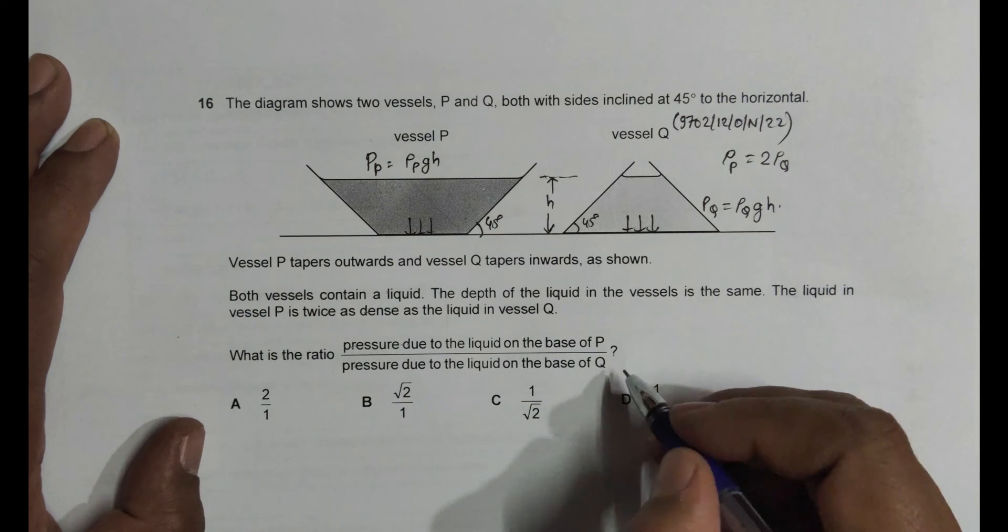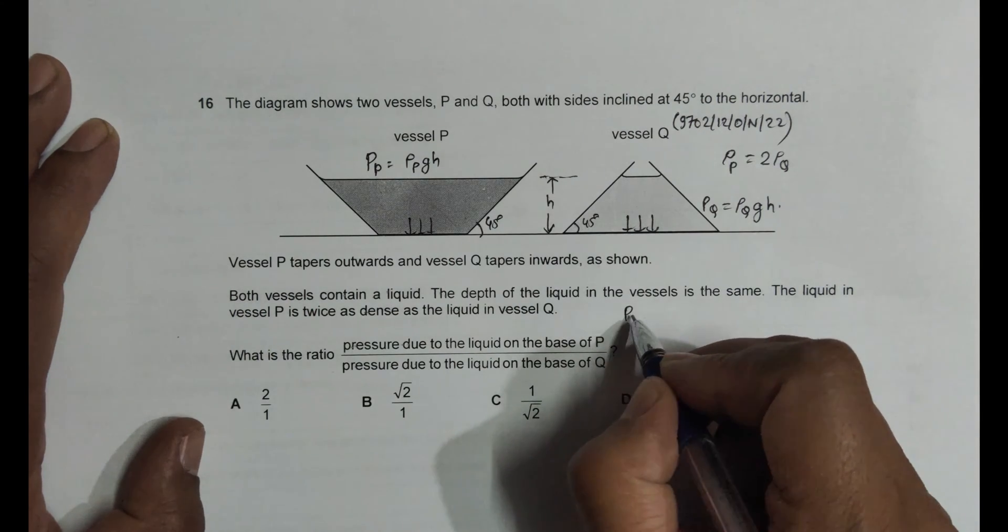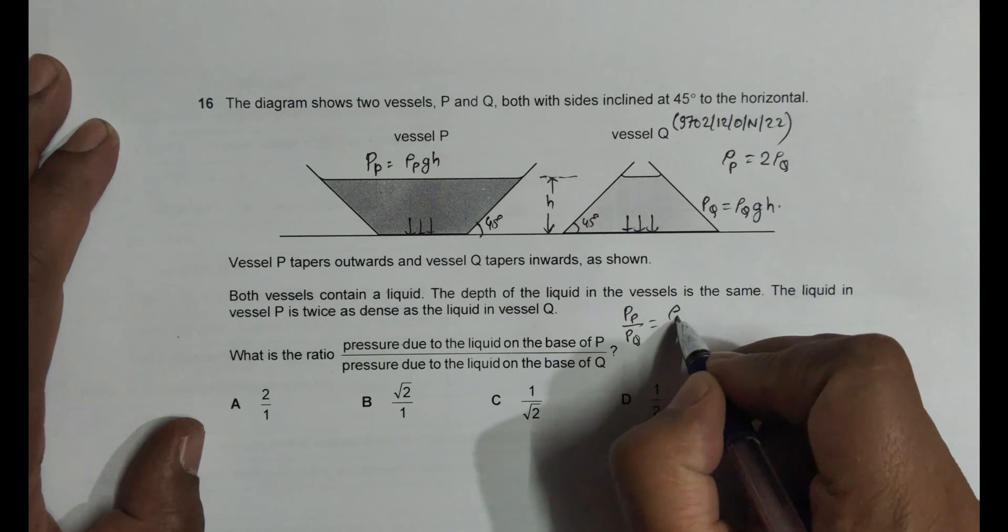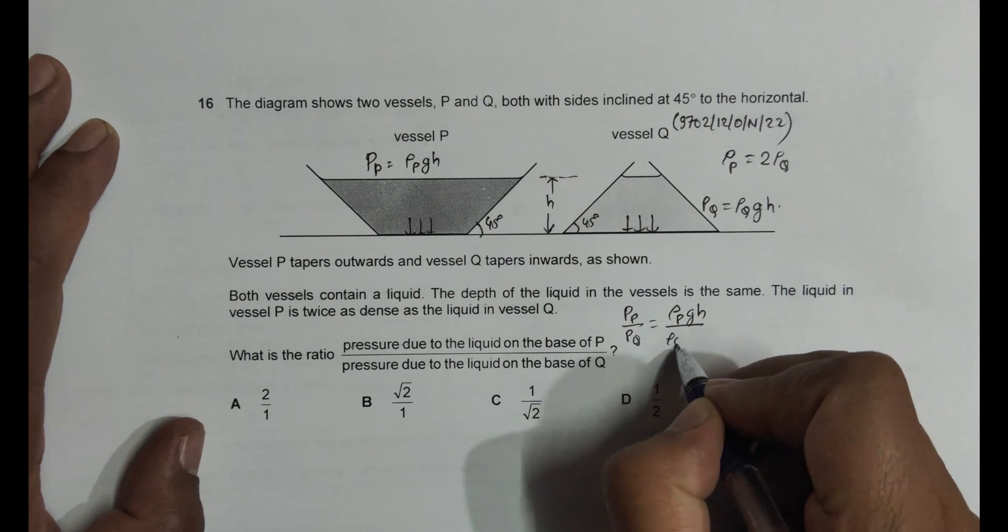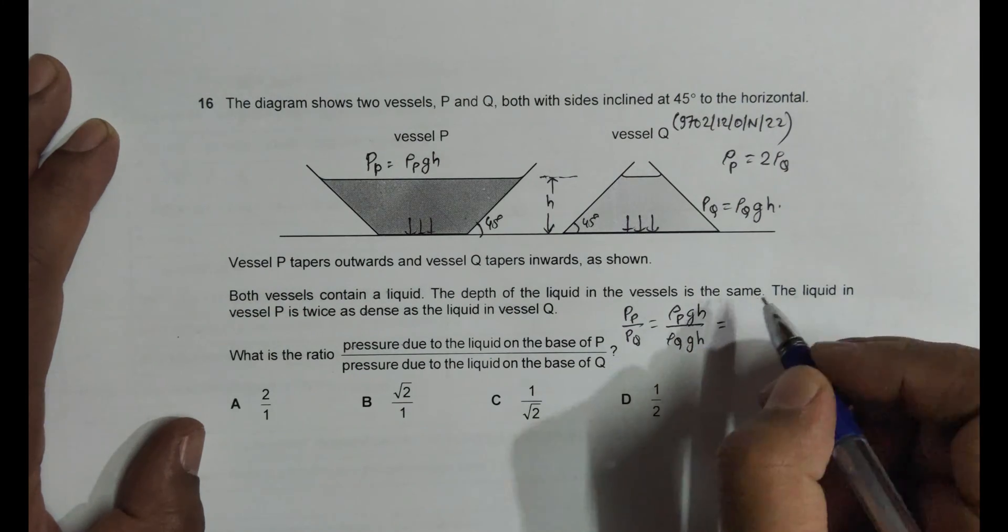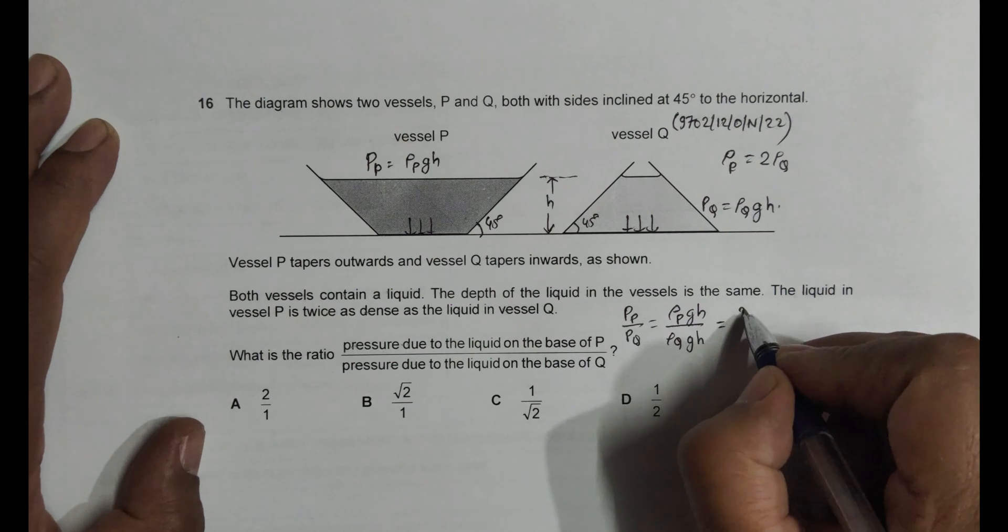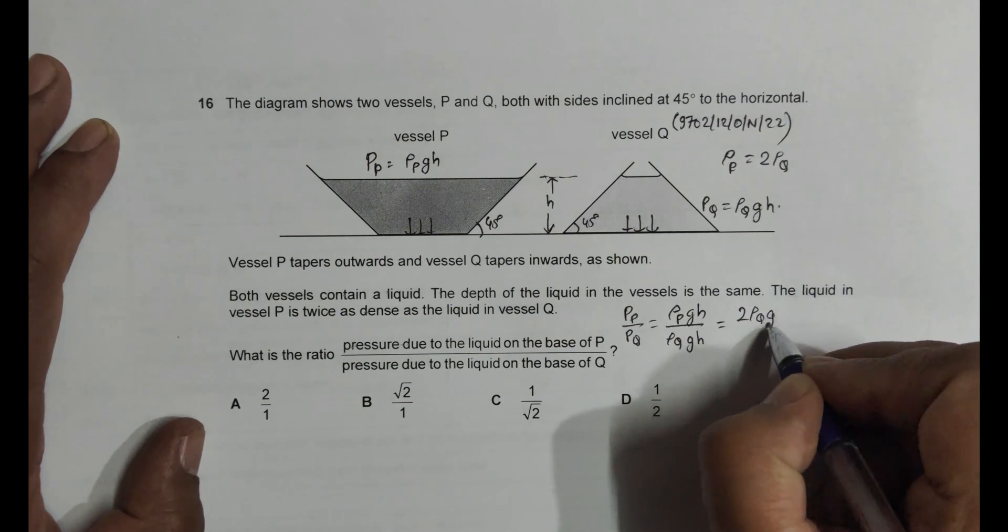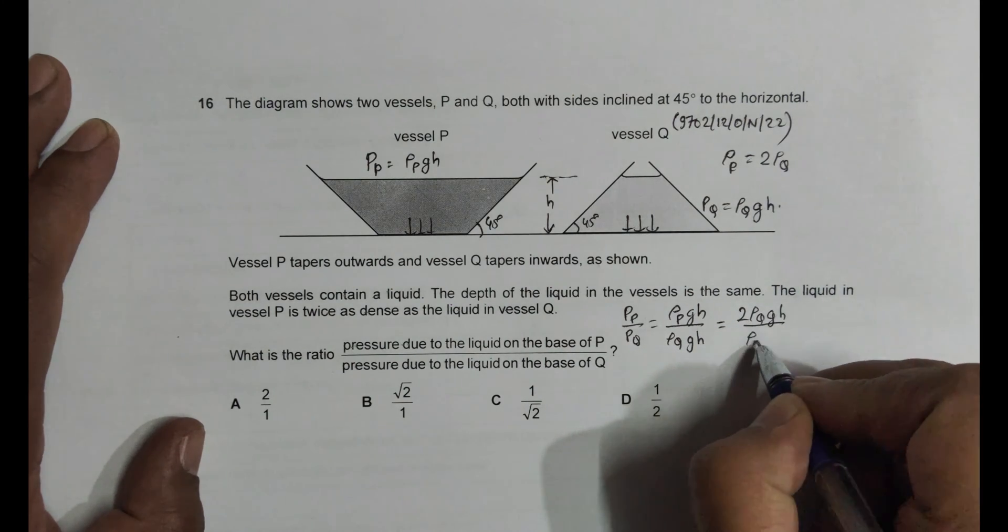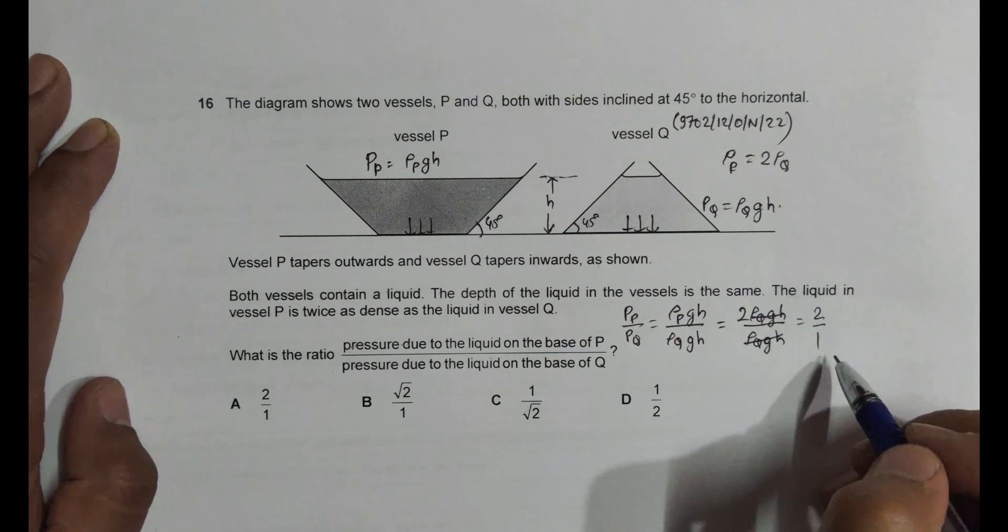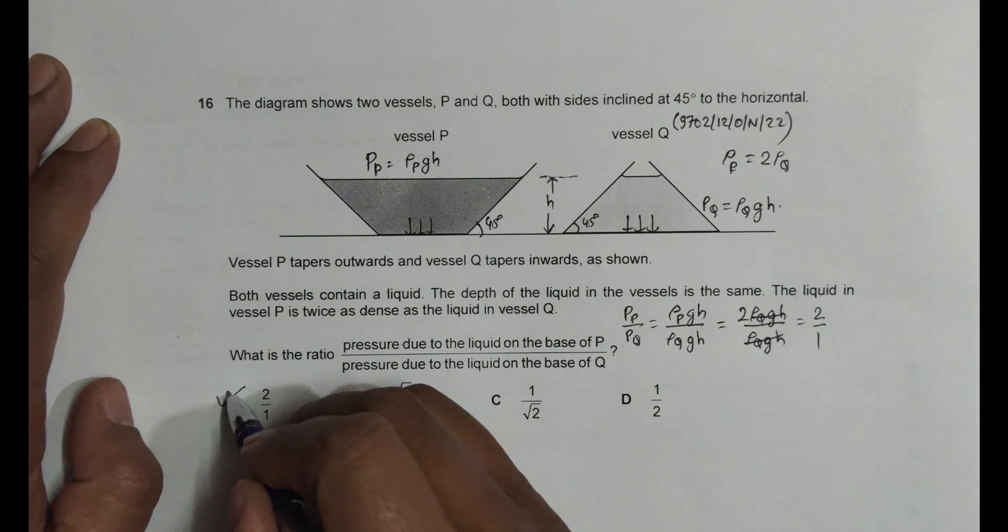So if I take the ratio here, I'll have pressure P by pressure Q is equal to ρ_P·G·H by ρ_Q·G·H. And what we are given is ρ_P is equal to twice of ρ_Q. So it is 2·ρ_Q·G·H by ρ_Q·G·H. This cancels. It will be equal to 2 is to 1. So the answer is 2 is to 1, which is option A.